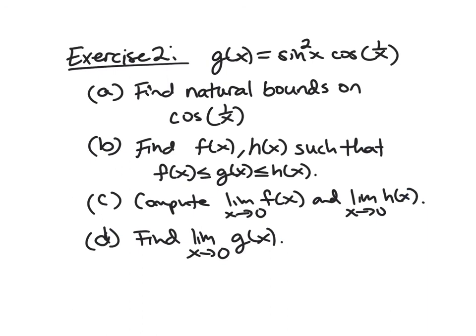Okay, so here's our second exercise that we'll close with. I want you to find the limit as x approaches 0 of g of x, where g of x is sine squared x times cosine of 1 over x. So I want you to use the squeeze theorem, and I've kind of stepped it out here. And we'll first note that the issue, of course, is with cosine of 1 over x at 0. Sine squared of x seems to be okay.